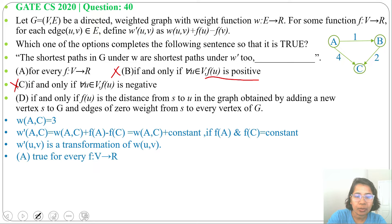Next, option D: if and only if F(U) is a distance from S to U in the graph, obtained by adding a new vertex S to G and edge of 0 weight from S to every vertex of G. Let's add a new vertex S and from S to every vertex, there is an edge of weight 0.